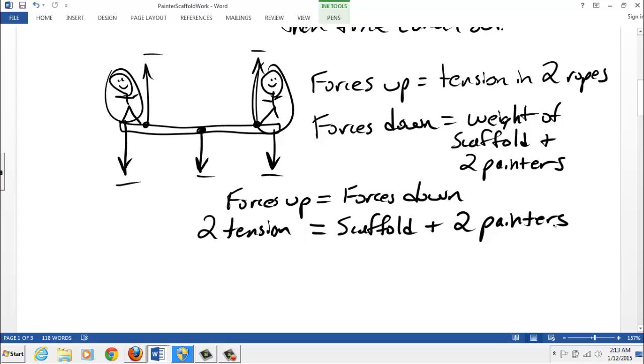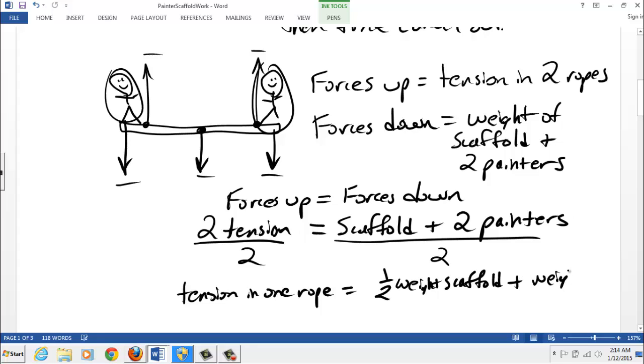If we divide everything by two, tension in one rope is going to be half of the weight of the scaffold plus the weight of one painter. Divide scaffold by two, also divide two painters by two, there you go, just do a little algebra, and that's how you do it.